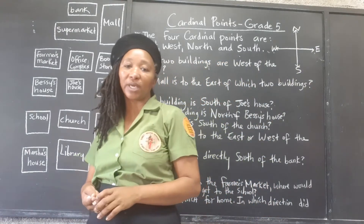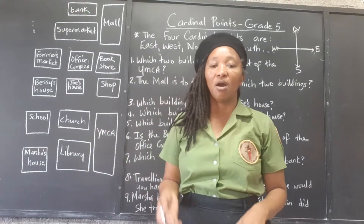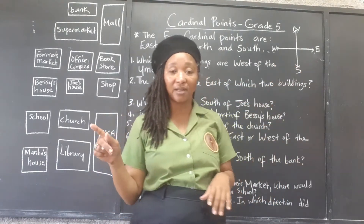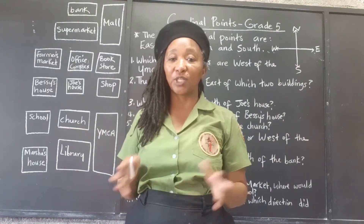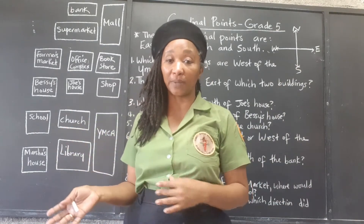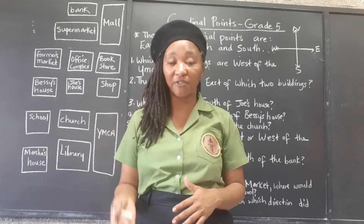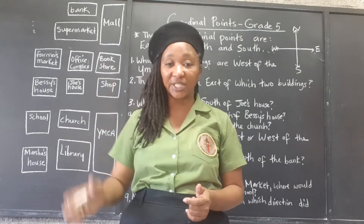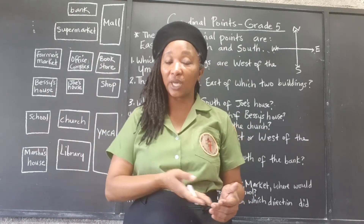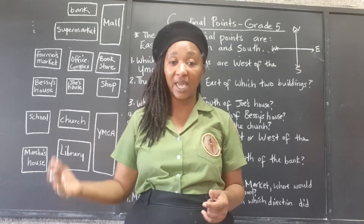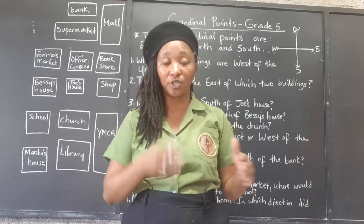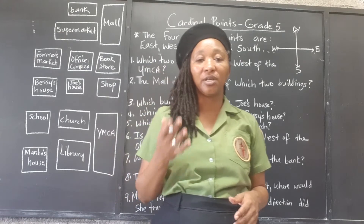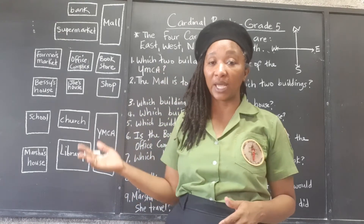So if we're asked to compare the location between two places, you could even sketch this — sketch your cardinal points. But where do you sketch it? We would sketch it at the place that we're leaving from to see. So where is B from A? You would sketch it at A to see the location of B from A. Where is A from B? You would draw your T — make sure it's straight down, straight across — at B to see where A is from B.